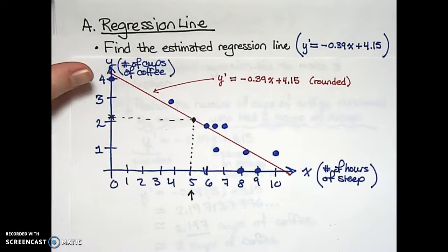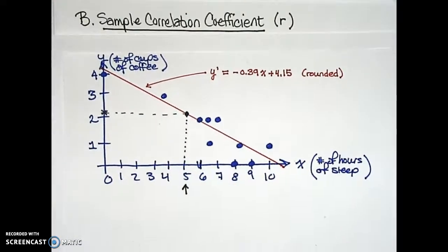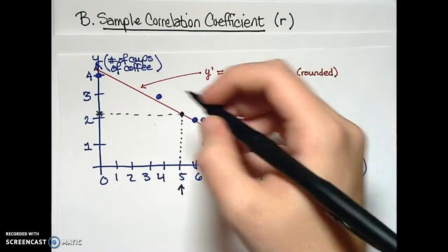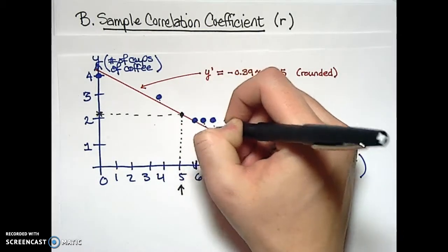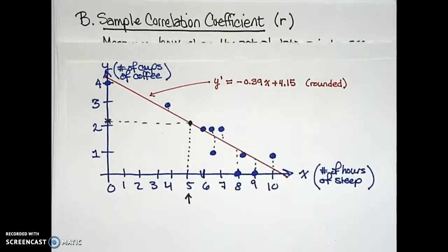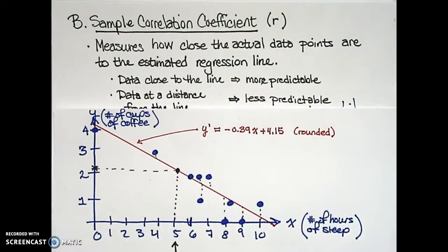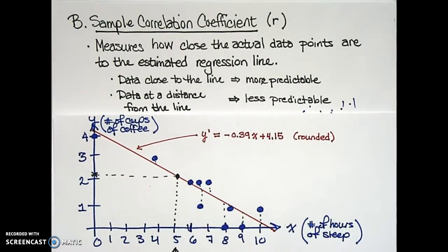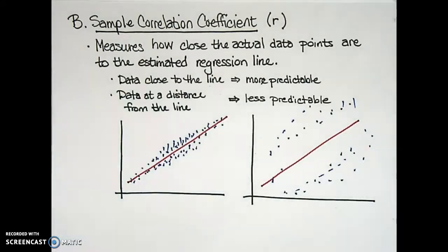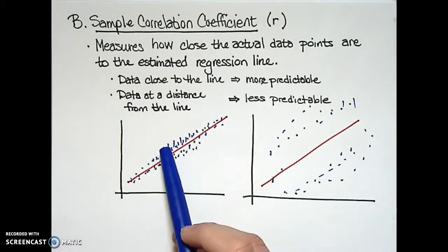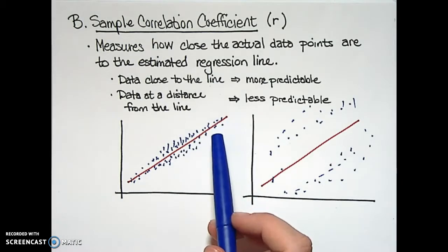We now move on to the second question: how predictable is this relationship between two quantities? In answering this, we're going to talk about the sample correlation coefficient. To determine whether the relationship between two quantities is strongly or weakly related, we look at how close the actual data points are to the estimated regression line. Data closer to the line indicates a more predictable or stronger relationship, while data points further from the line suggest a weaker or less predictable relationship.